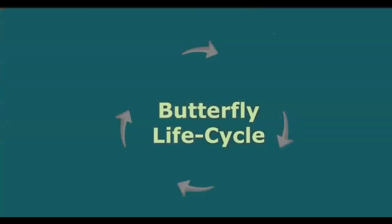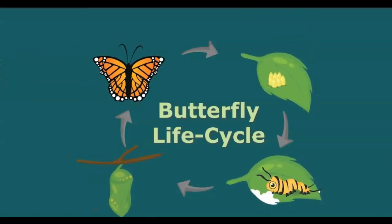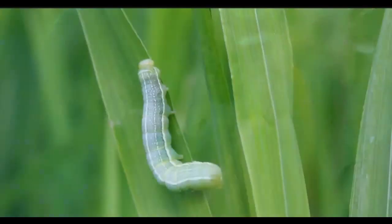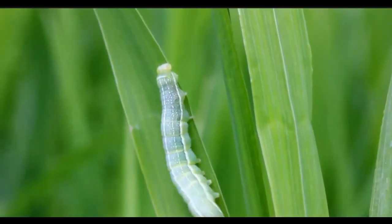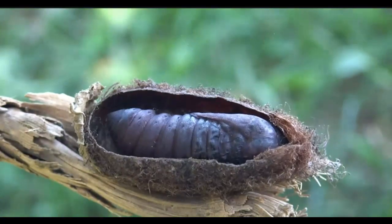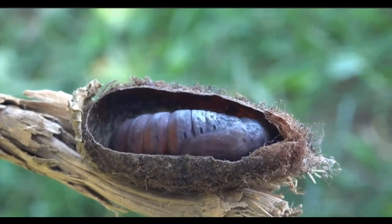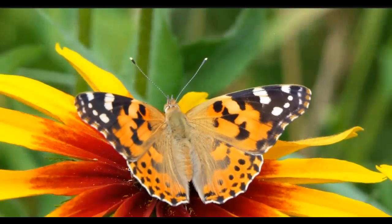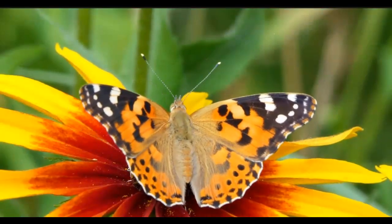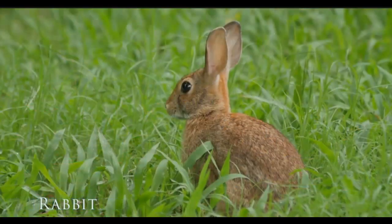The life cycle of a butterfly includes four stages. It starts out as an egg, then changes into a caterpillar. From a caterpillar, it becomes a pupa, and then finally an adult butterfly.